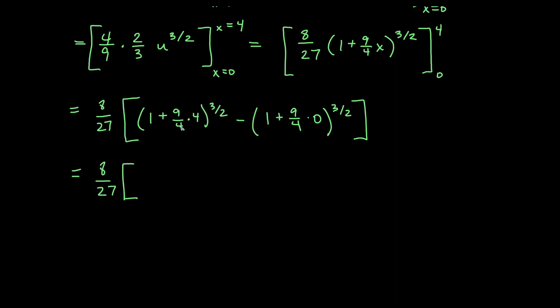We'll get 8 over 27. Here the 4 is going to cancel with the 4 down there, it becomes a 1. So we get 1 plus 9, so we get 10 to the 3 halves minus, and then here this would become 0, so 1 plus 0 would be 1 to the 3 halves. Now anything, any power of 1 is just going to be 1. So this is really going to be 8 over 27, and then we'll have 10 to the 3 halves minus 1. We could leave it that way in terms of units.